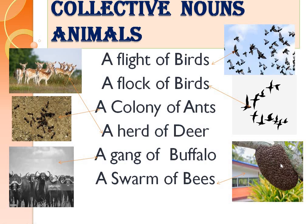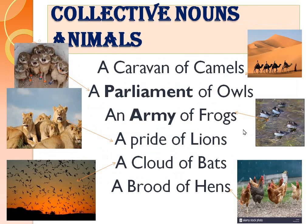A swarm of bees. A caravan of camels — not one camel, here are plural camels going from one place to another or carrying loads, going in a group. So this group is a caravan of camels. A parliament of owls. An army of frogs. A pride of lions. You can see bats flying over the sky capturing a portion — that is a cloud of bats. A brood of ants. So: brood, cloud, pride, army, parliament, caravan — all collective nouns.